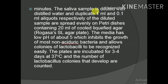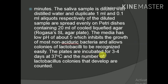The saliva sample is diluted with distilled water, and duplicate 1 ml and 0.1 ml aliquots of the diluted sample are spread evenly on petri dishes containing 20 ml of cold liquefied Rogosa's SL agar. This medium has a low pH of around 5, which inhibits the growth of mostly non-aciduric bacteria and allows Lactobacillus colonies to be recognized easily. Plates are incubated for 3 to 4 days at 37 degrees centigrade and colonies are counted.